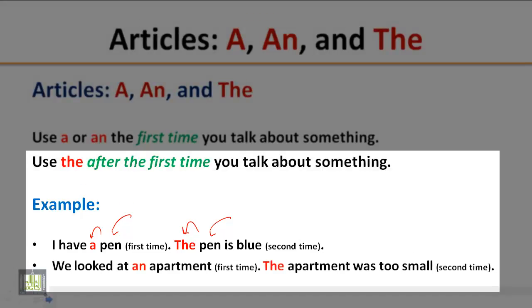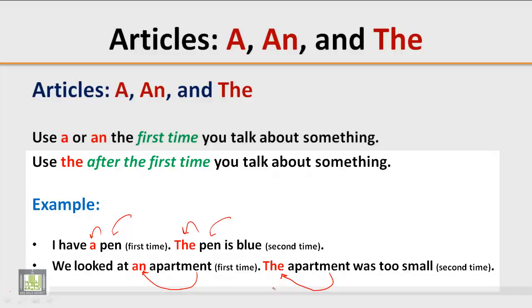We looked at an apartment. The word apartment here is mentioned for the first time, so it is preceded by An. The apartment was too small. The word apartment here is mentioned for a second time, so it is preceded by The.